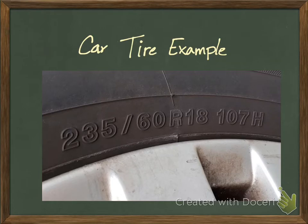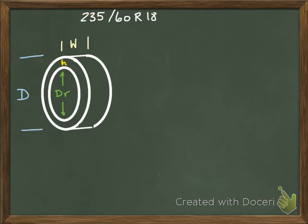The first one we see is 235, and we said before that's our width. 60 is the aspect ratio, and then 18 is the rim diameter. So 235 is my width and that is in millimeters. So width equals 235 millimeters.